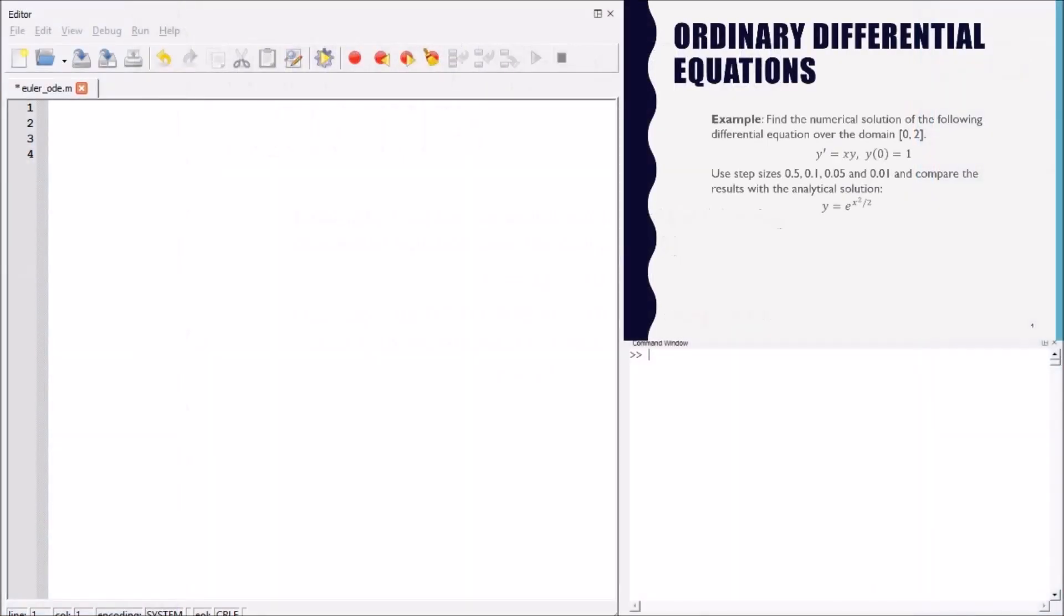Let's go to the editor and start coding step by step. First we define the function. The function has two variables, so we should have two arguments when we define the function.